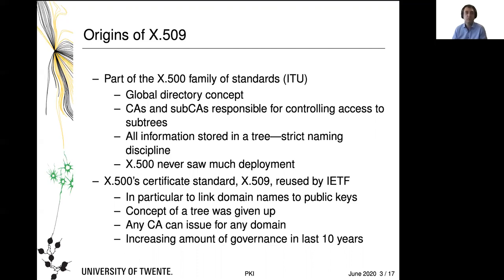The IETF reused X.509 in particular to issue certificates for domain names and bind them to public keys, so you can authenticate a domain you are connecting to. The concept of a tree was completely given up; instead they pursued the concept of a forest of CAs that are equal, where any CA can issue for any domain. Governance followed quite late, but in the last 10 years in particular we have seen quite a bit of progress there.